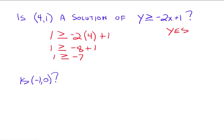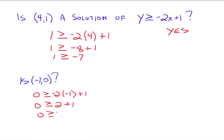But what about (-1, 0)? Now we've got 0 for Y and negative 1 for X: 0 is greater than or equal to negative 2 times negative 1 plus 1. Negative 2 times negative 1 is 2, and 2 plus 1 is 3. Is 0 greater than or equal to 3? No, that's a false statement. So no, (-1, 0) is not a solution to this inequality.